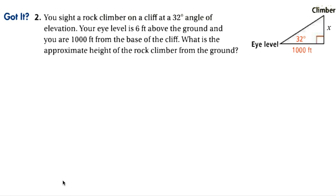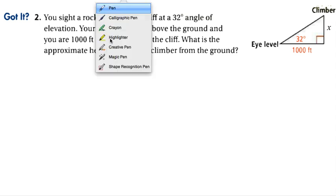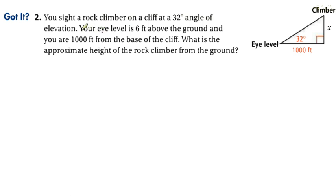Here's one for you to try — pause the video and I'll show you the solution when we get back. The problem says you sight a rock climber on a cliff at a 32-degree angle of elevation. Your eye level is 6 feet above the ground, and you are 1,000 feet from the base of the cliff. What is the approximate height of the rock climber from the ground? Remember, we'll need to add back the 6 feet at the end.